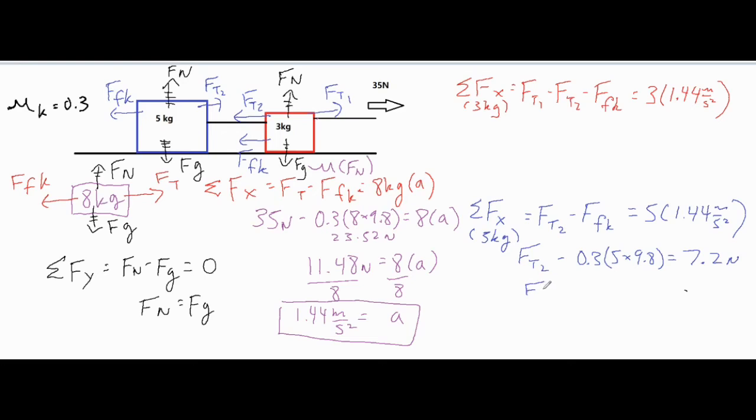So then we have our FT2 minus the product of these numbers, which is 14.7 equal to 7.2. Add 14.7 to both sides, and we have a force of tension of 21.9 newtons. So if we just wanted the force of tension of this string in between the 3 and 5 kilogram block, we'd already be done.